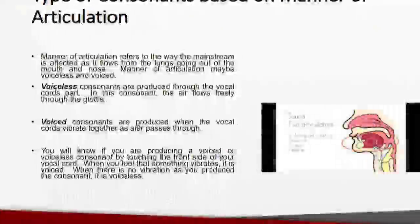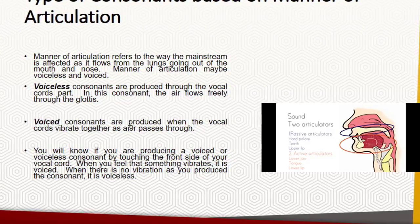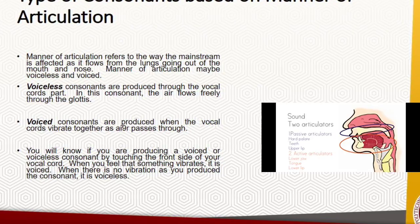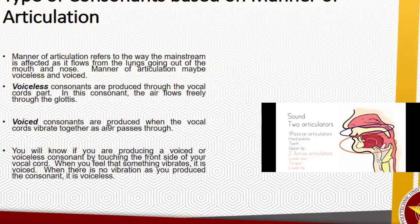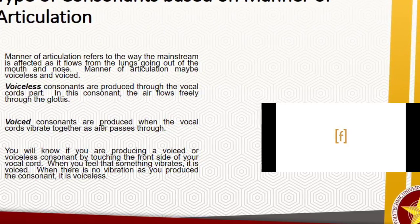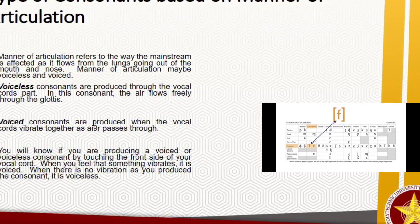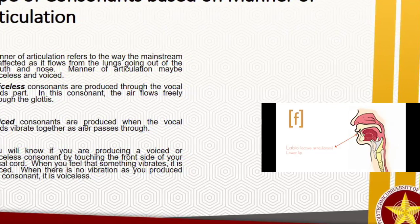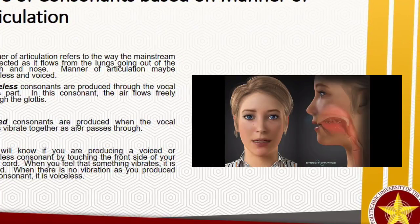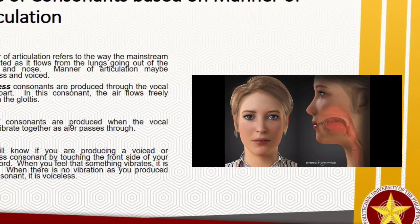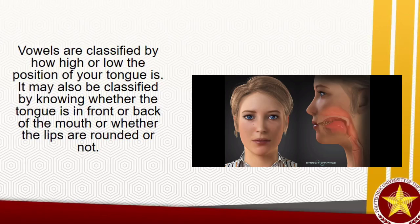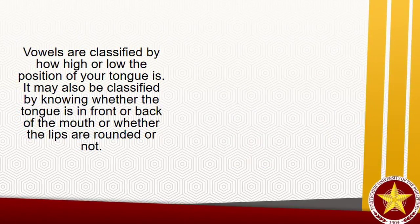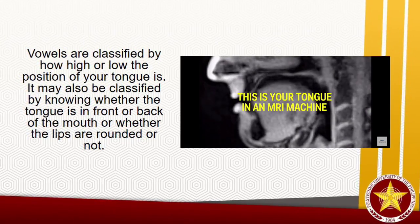Manner of articulation refers to the way the airstream is affected as it flows from the lungs going out of the mouth and nose. Manner of articulation may be voiceless or voiced. Voiceless consonants are produced through the vocal cords apart — air flows freely through the glottis. Voiced consonants are produced when the vocal cords vibrate together as air passes through. You can tell if you are producing a voiced or voiceless consonant by touching the front of your throat — when you feel vibration, it is voiced; when there is no vibration, it is voiceless.